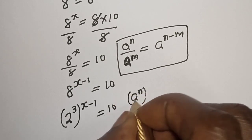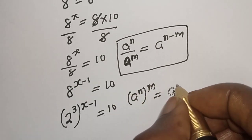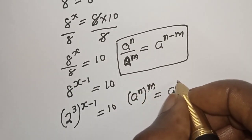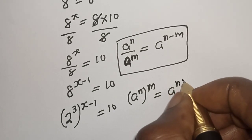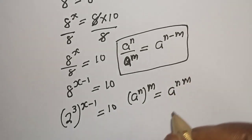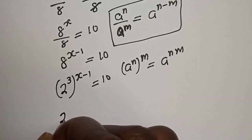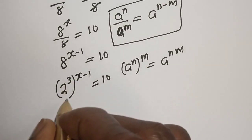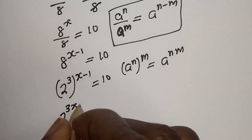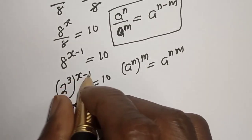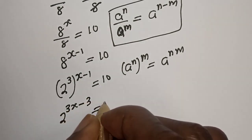this is equal to a raised to power n times m. Then here we have 2 raised to power 3 times (s minus 1), which expands to 2 raised to power 3s minus 3, is equal to 10.